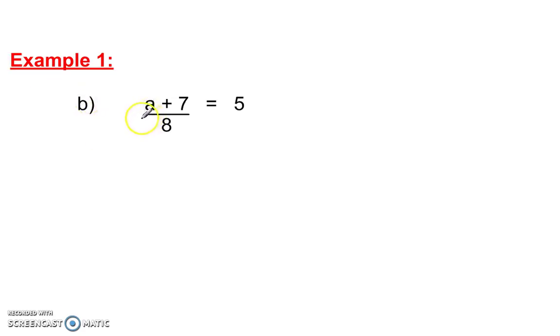Now, here's a grouping symbol. So, grouping symbols need to be undone first. We multiply by 8 on each side. Now, we have a plus 7 is equal to 40. Now, we want to undo what was on that side. Here's a.